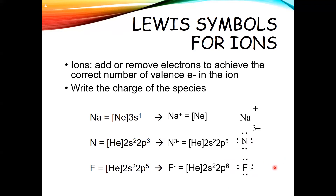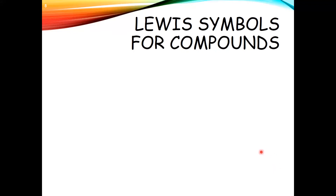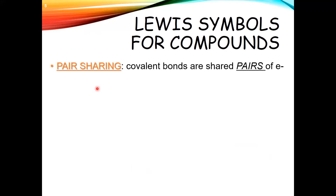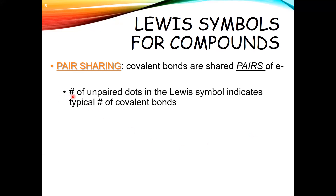The place that Lewis structures are really powerful is not in individual atoms, but in compounds and molecules. The idea is that we're going to be sharing our unpaired electrons with other atoms. Covalent bonds are actually shared pairs of electrons — one atom donates one electron, the other atom donates one electron, and they share those two together. The number of unpaired dots in the Lewis symbol indicates the typical number of covalent bonds you're going to form.